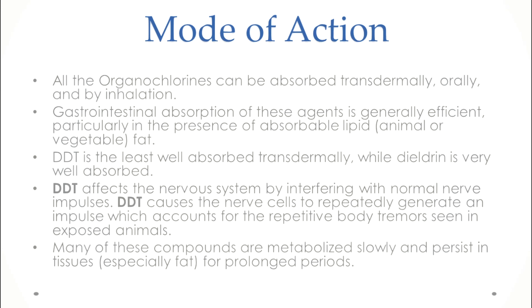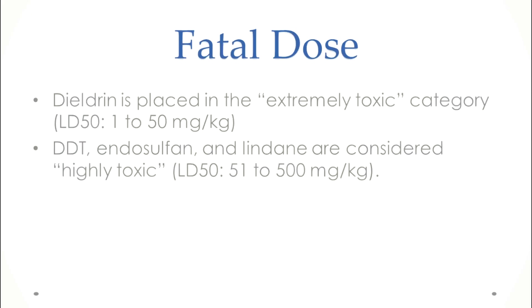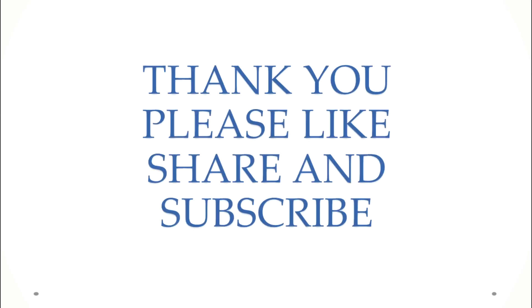Many of these compounds are metabolized slowly and persist in body tissues, especially fatty tissues, for prolonged periods of time. Regarding fatal doses: dieldrin is in the extremely toxic category with a lethal dose of 1 to 50 mg/kg. DDT, endosulfan, and lindane are considered highly toxic — slightly less toxic than dieldrin — with a lethal dose ranging from 51 to 500 mg/kg.